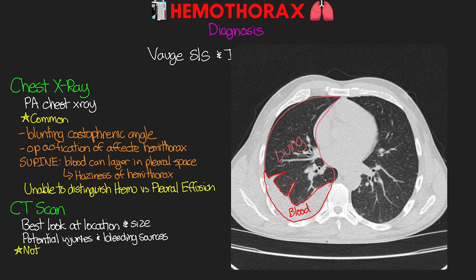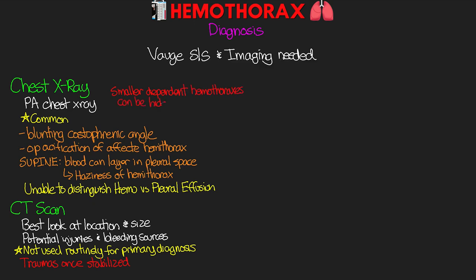The CT is not used routinely as our primary diagnosis tool, but we will often use it especially for trauma patients once the trauma is stabilized. This is important because smaller dependent hemothoraxes can actually be hidden on x-ray behind the diaphragm and abdominal structures. In cases of unstable traumas or emergencies, it may not be possible to transport the patient for a CT scan.